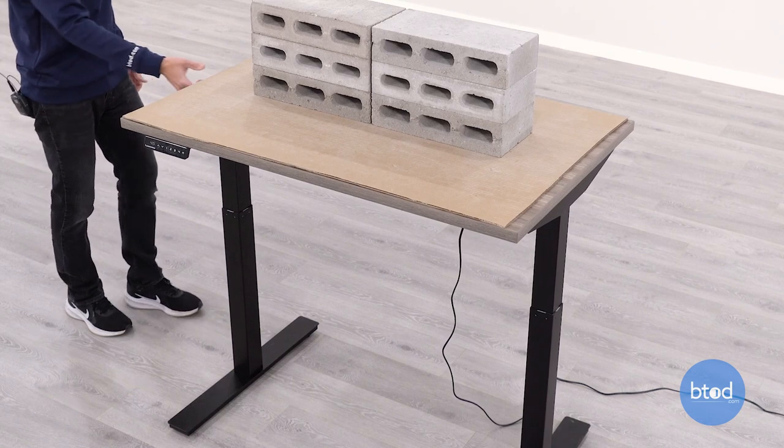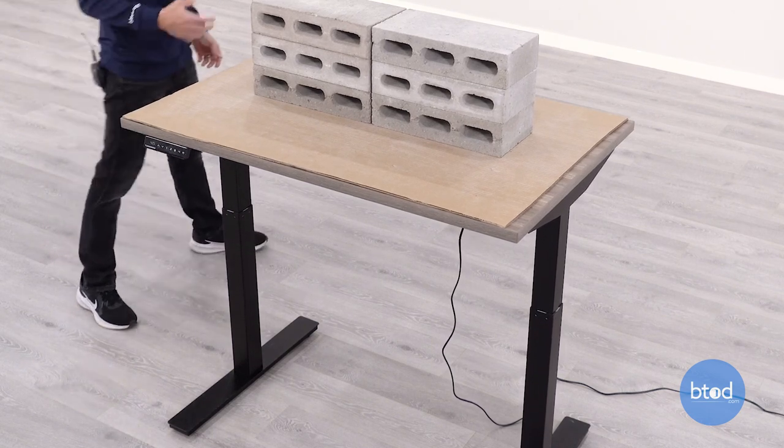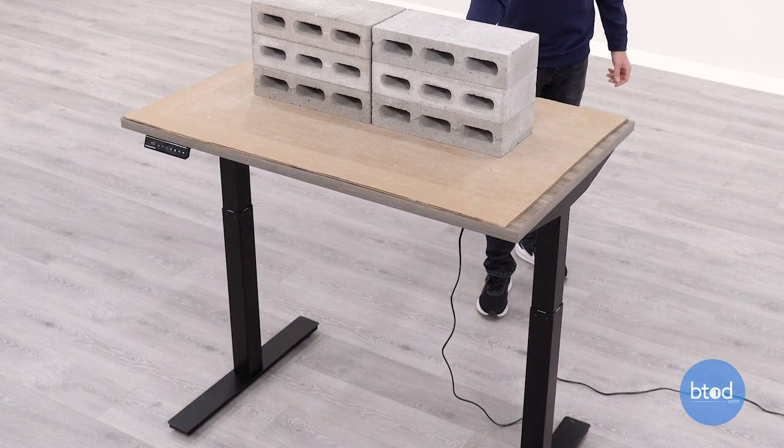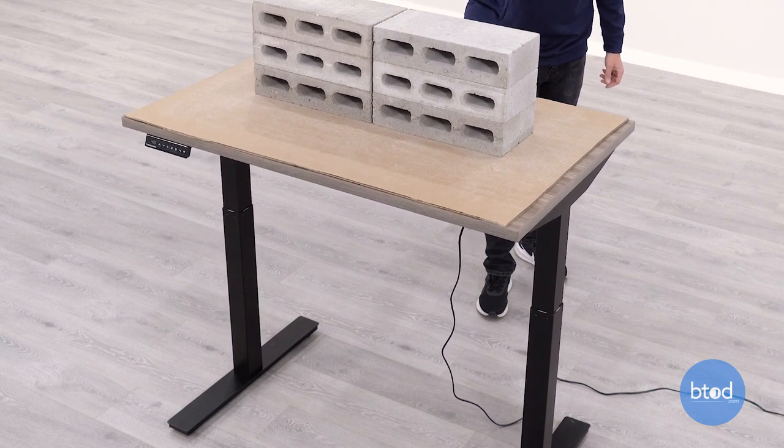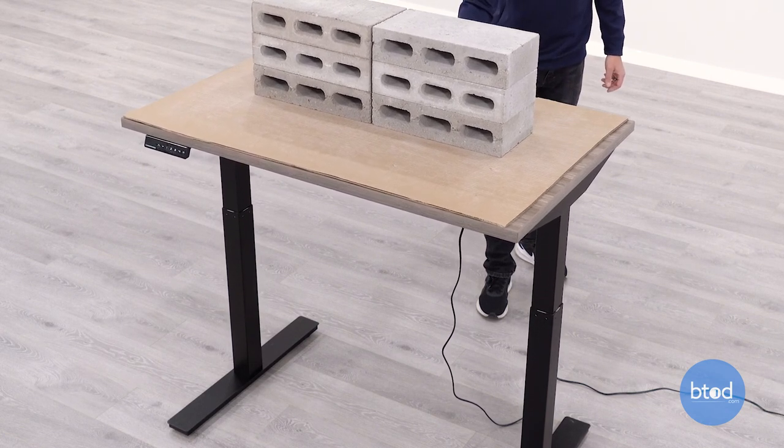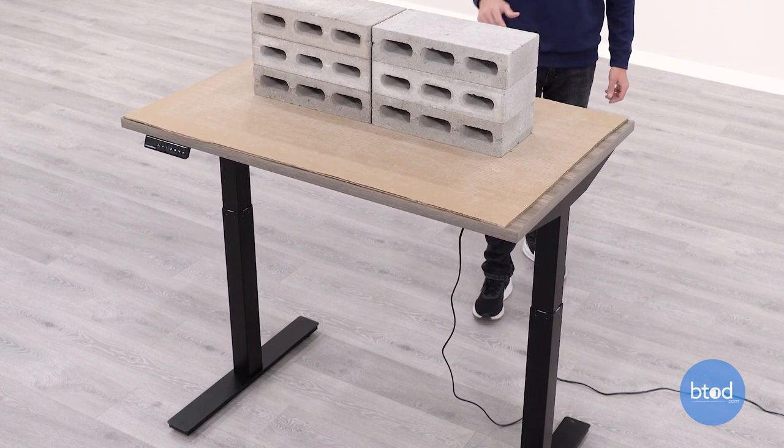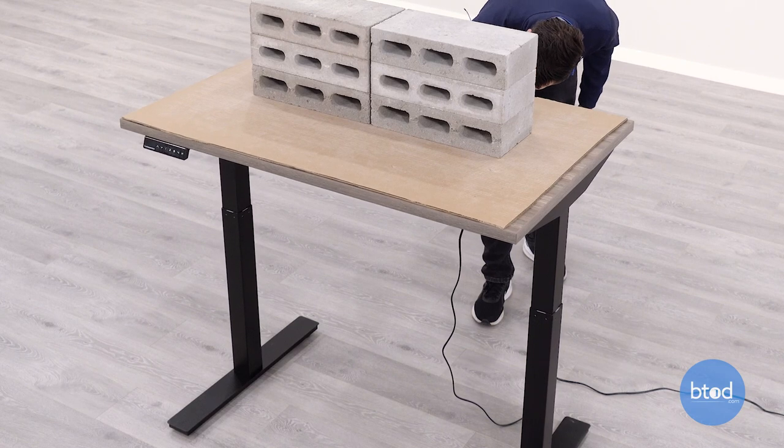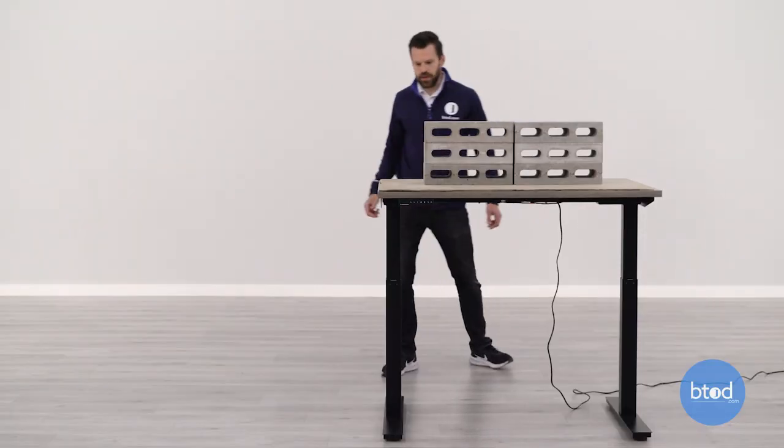But I think, with the square tubes at 42 and a half, I still think that this Autonomous Home is doing better than the more expensive product from Autonomous. But you can see here, this is where it's a little bit more of an issue, that front to back rocking motion. This is where it's more noticeable here.